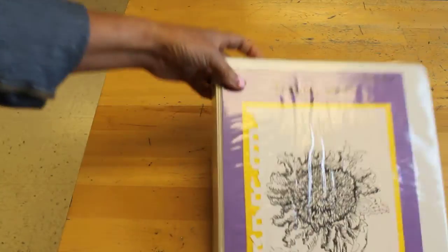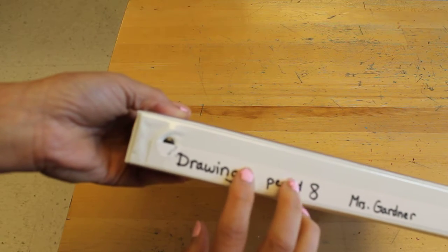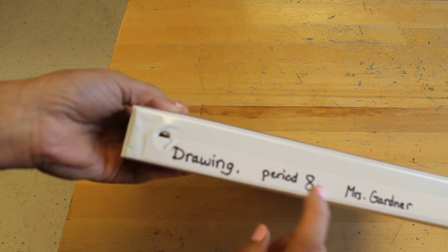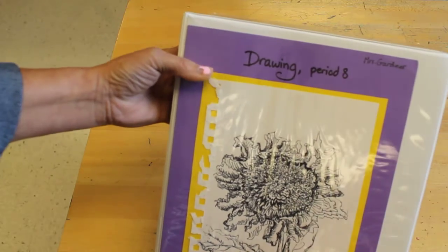Now skipping to the front though, I always start here. I make sure that you have it labeled so drawing class or period eight and your name on the spine. That's important. And then also your name and label on the front.